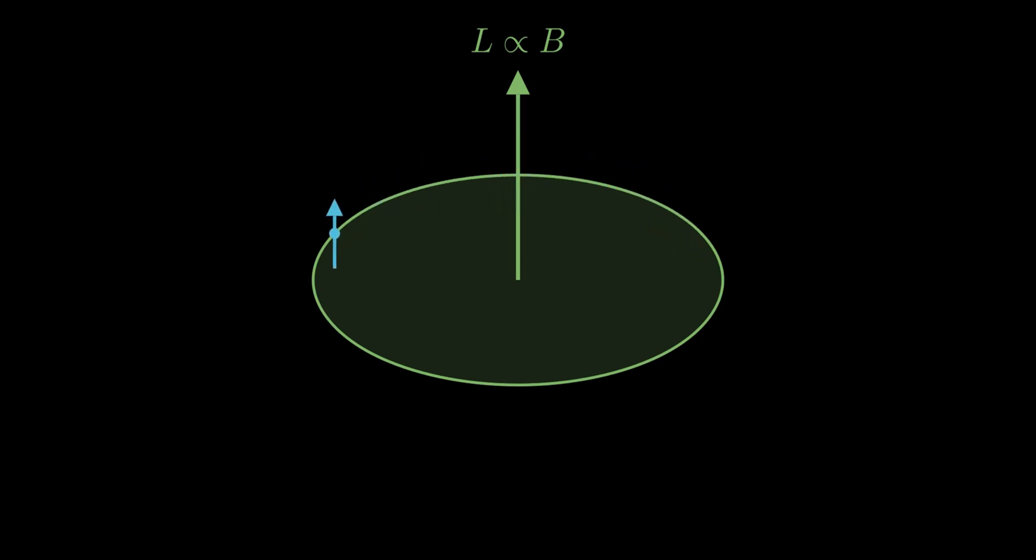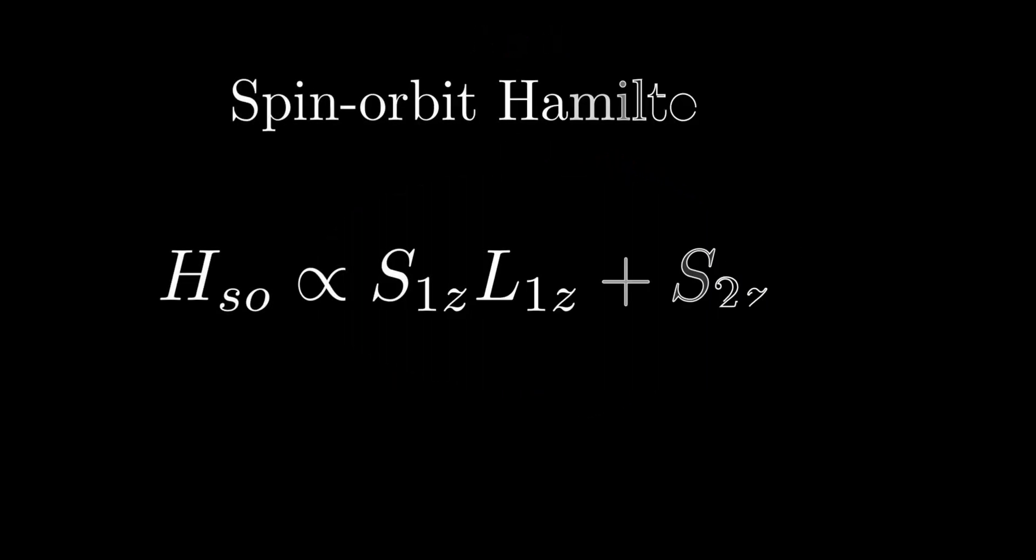Let's now explore how the interaction between an electron's orbital motion and spin in the z-direction facilitates this transition. The spin-orbit Hamiltonian is given by the product of the spin and orbital angular momentum operators, lz, for each electron.